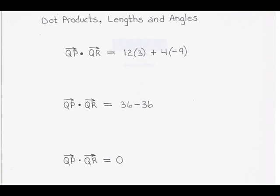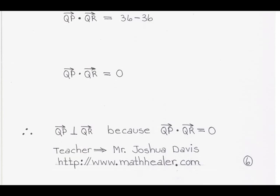Using the definition and property of dot products, we have just demonstrated that vector QP and vector QR are perpendicular because their dot product is zero. Therefore, QP is perpendicular to vector QR because the dot product of vector QP dotted with vector QR is equal to zero.